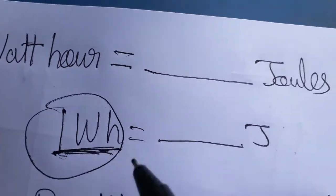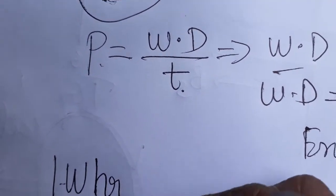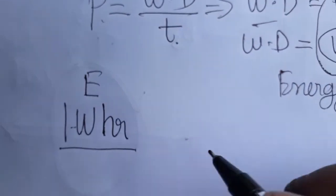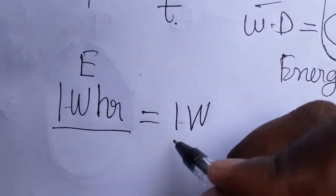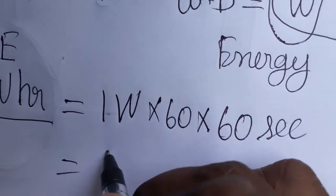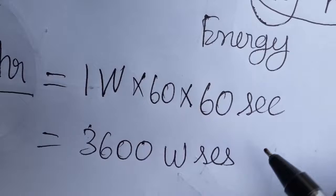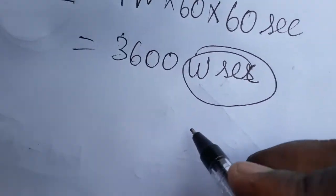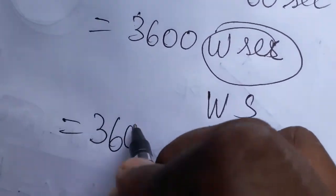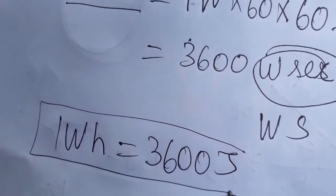Now the question: one watt-hour is equal to how many joules? One watt-hour equals one watt into one hour. One hour is 60 into 60 seconds, which gives us 3600 watt-seconds. Since watt-second is the SI unit equivalent to joules, one watt-hour is equal to 3600 joules. Thank you.